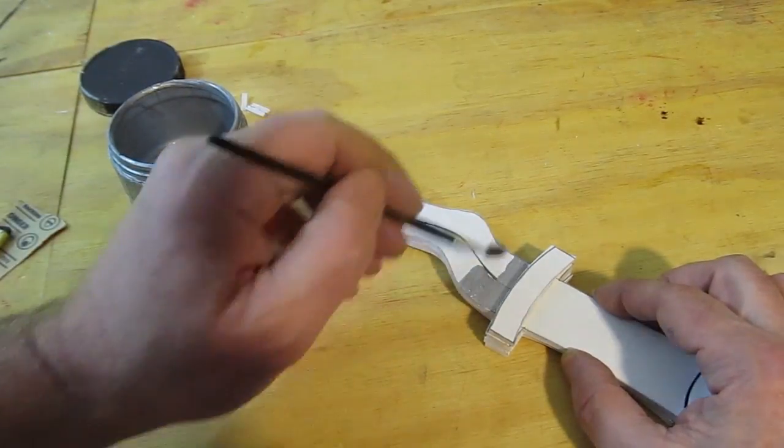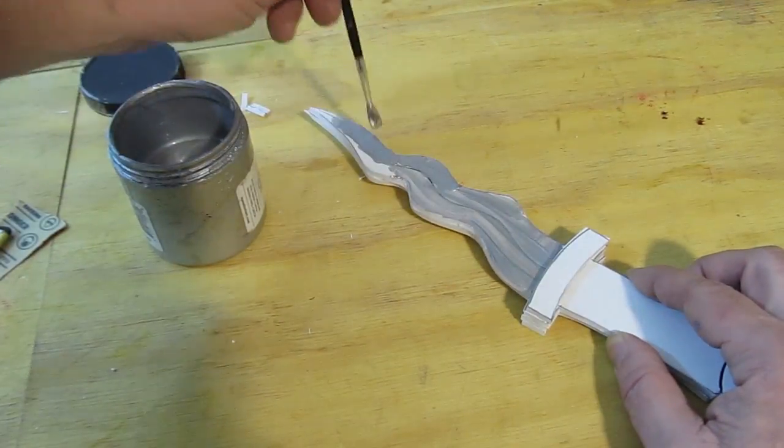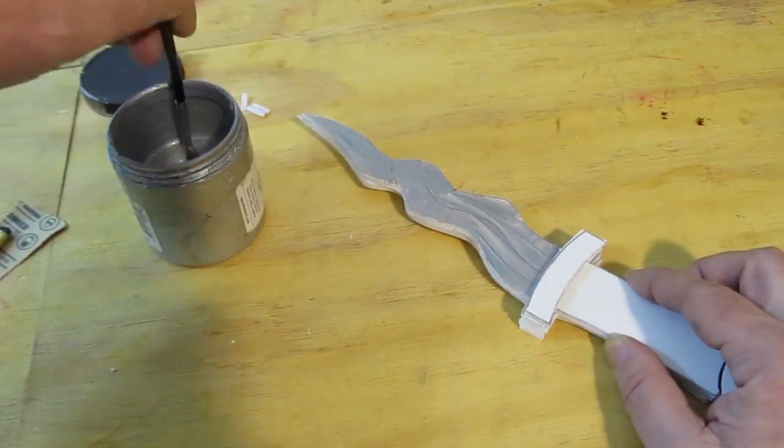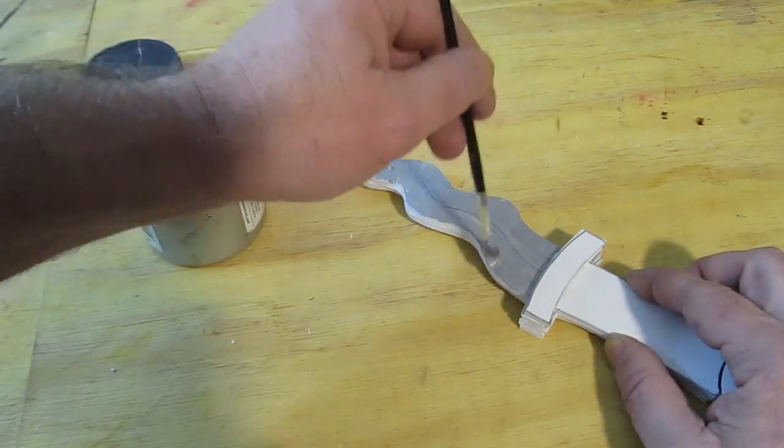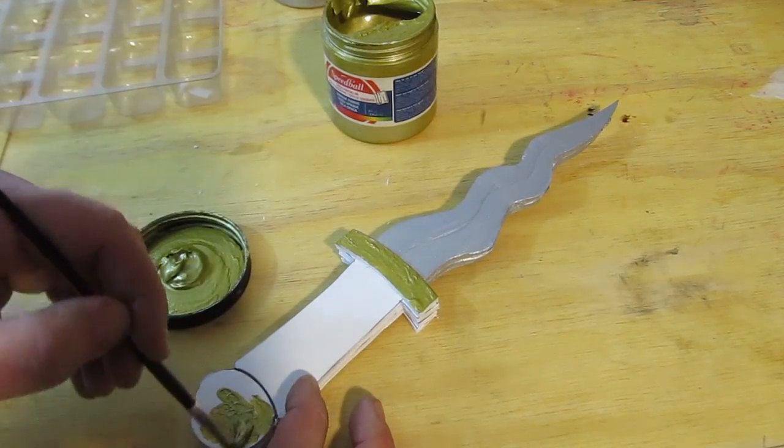I went ahead and painted the blade silver. I like the Speedball paints. It takes a little bit of work to get a good thick layer on, but it gives a nice silver color.